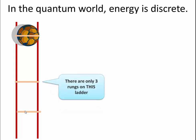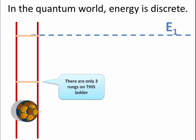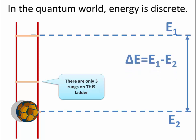There are only three rungs on this ladder. So we start at this energy level, call it energy one, and it goes down to that energy level. It can go to this one, it can go to this one instead, but it can't go to anything else in between. This is the new energy level, energy two. What is the change of energy now? Well, the change of energy is E1 minus E2.